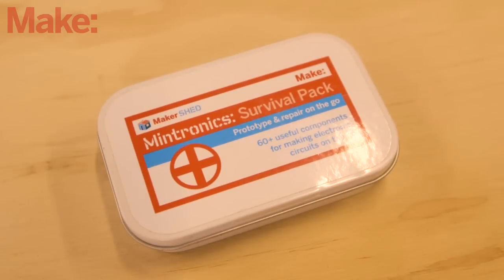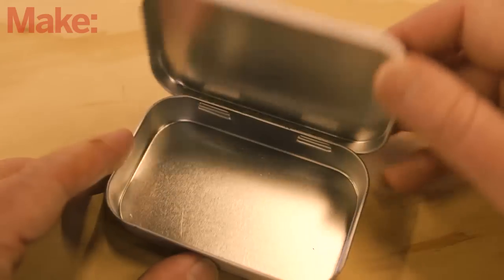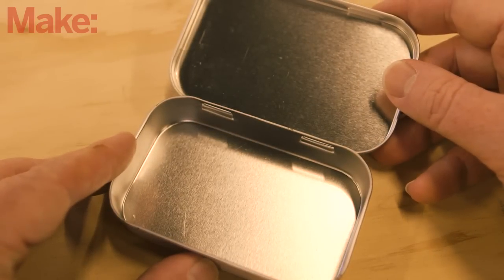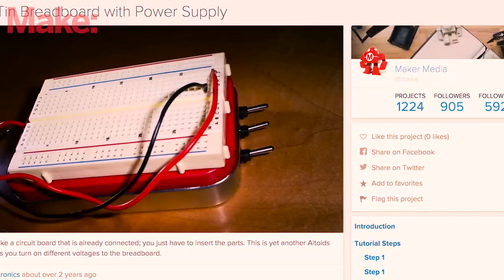The aluminum mint tin is an absolute mainstay in maker projects. Its sturdy construction and ubiquitous availability have adapted it from television remotes to electronic survival kits.